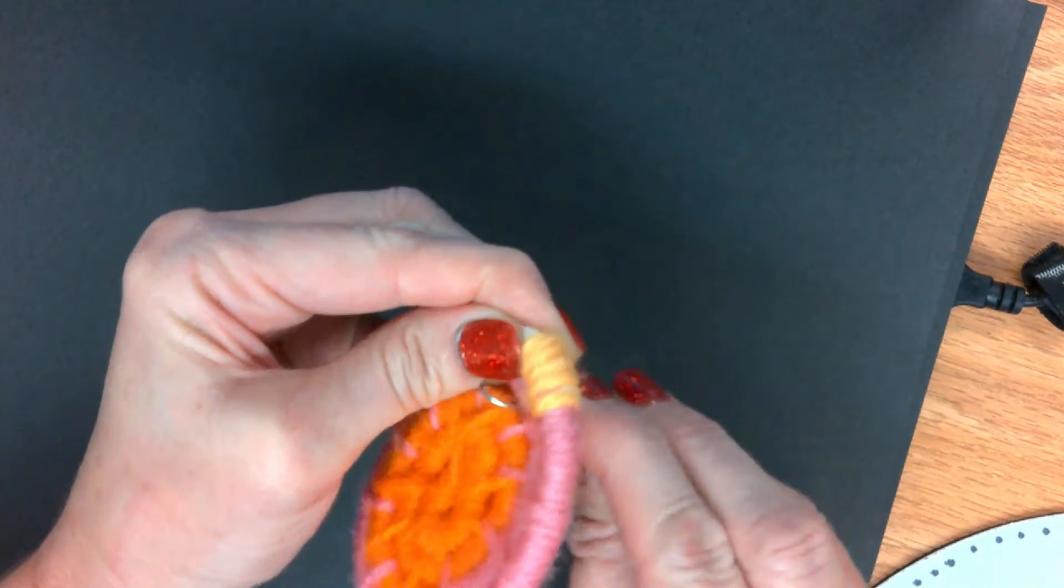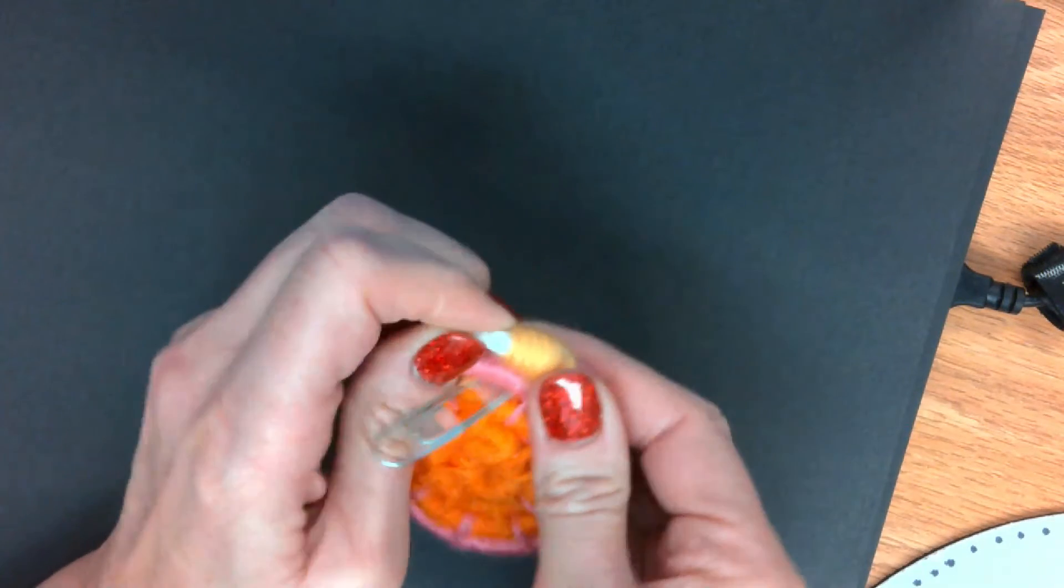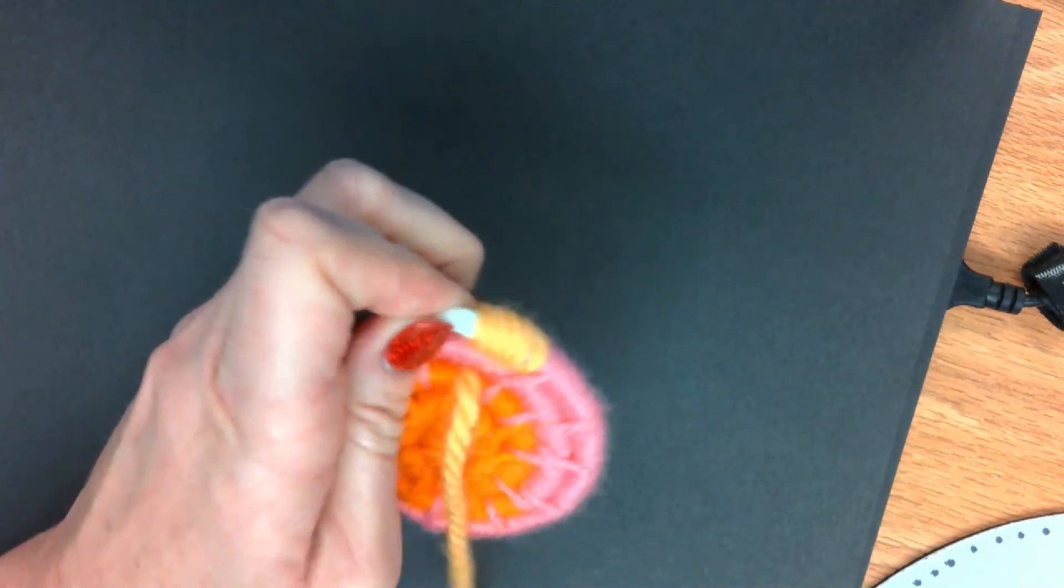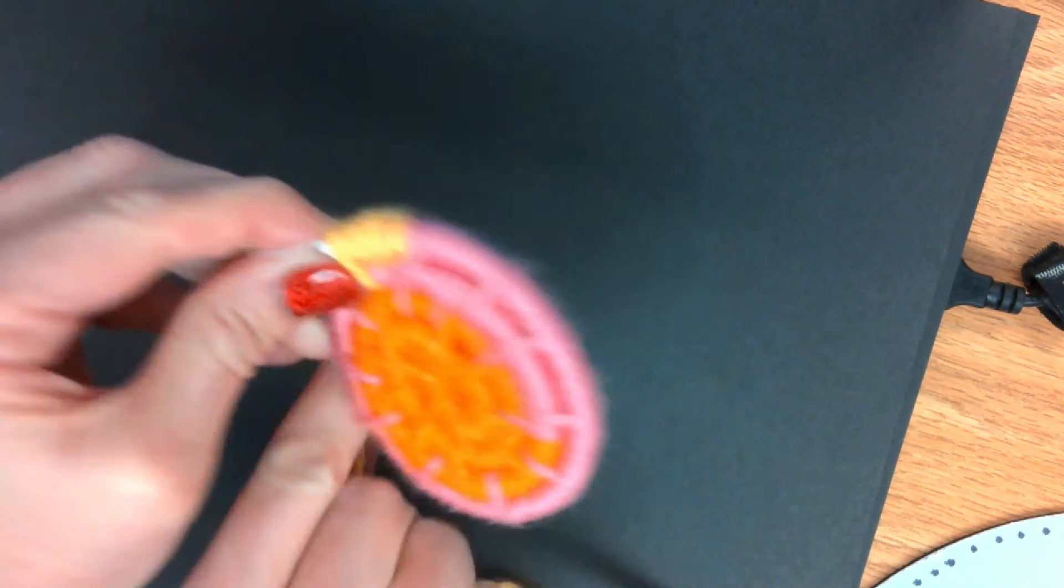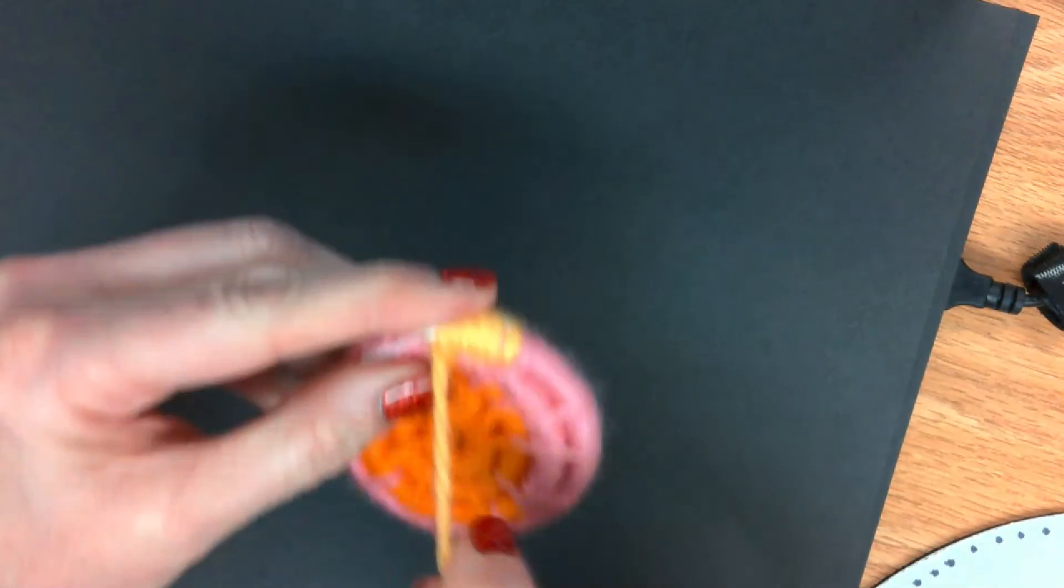So you're going to stitch to the layer before it just like normal, pull it through, and you're going to get back on track, pull tight, and now you want to start wrapping around your finger.